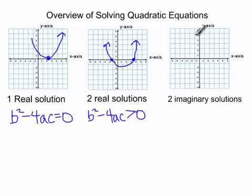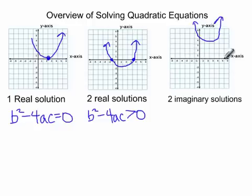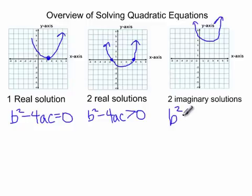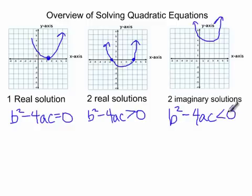In the last scenario, I may have two imaginary solutions. This is when the parabola never touches the x-axis. When does this happen? When b squared minus 4ac is negative, or less than zero.